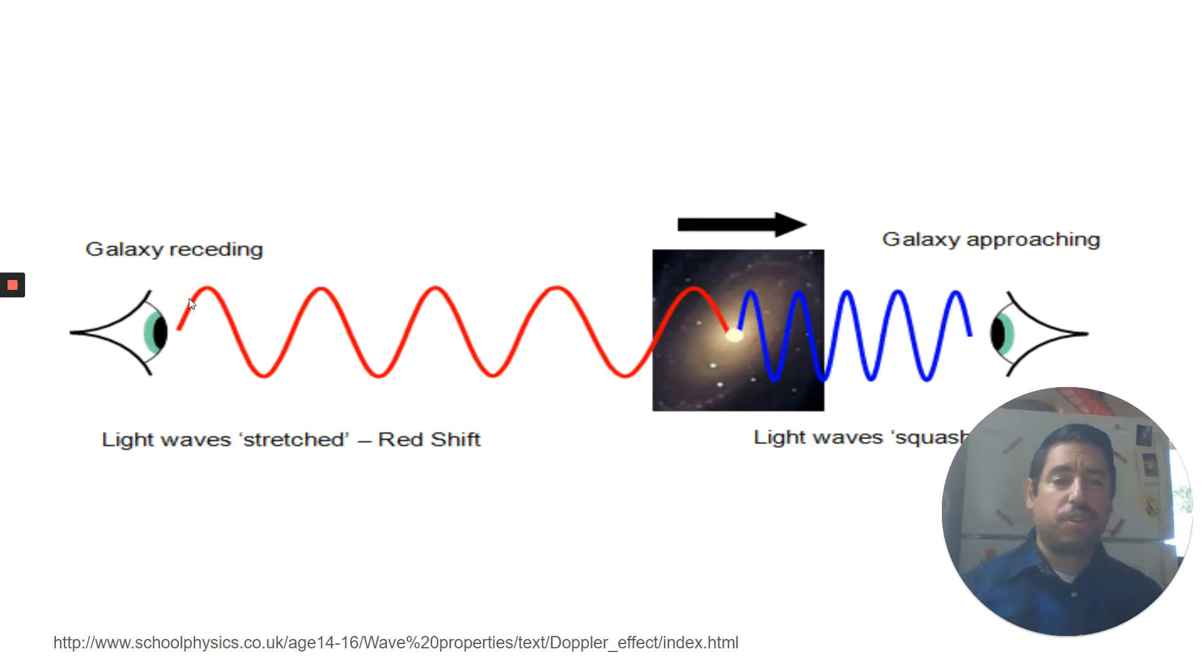And we actually use this to determine that galaxies are moving away from us. And when we look up in the sky with telescopes and we look at galaxies and other stars, we can see that the colors of those galaxies are red shifted. And what that means is that these galaxies are moving away from us. Light waves are getting stretched out, moving away so they're stretching.